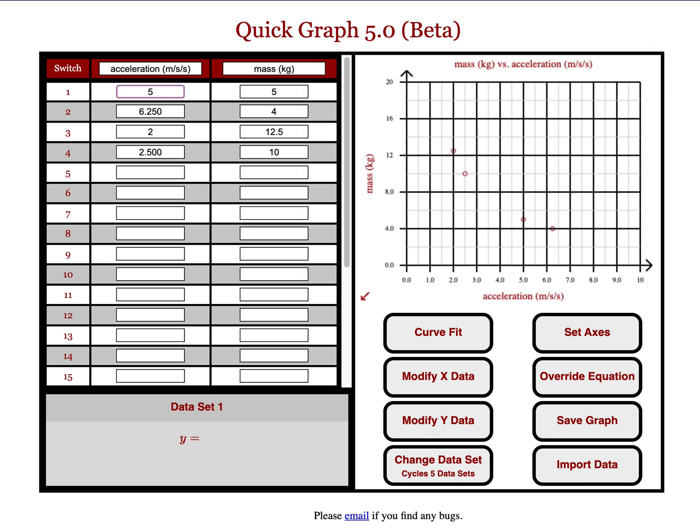I want to remind you of some of the other features, so here's a simple one data set graph. This is for acceleration and mass, and you'll notice I have them on the wrong axes, so I can just click and have them switch. So, if you want acceleration on the Y, and you accidentally typed it on the X, just use your switch button.